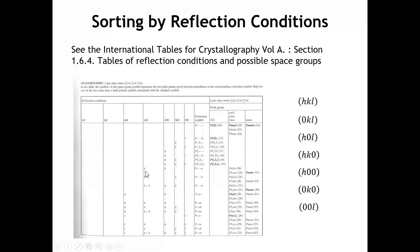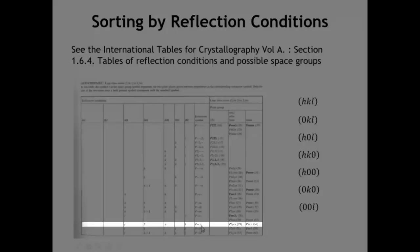We look at each category to see if there's a pattern in the peaks present and those absent. Where we see an H in the table, H must be an even number; where we see K, K must be even; H plus K means their sum must be even. Sometimes we might have H and K both required to be even, or conditions like 2H plus L equals 4N, meaning twice the H index plus the L index must be a multiple of 4. Once you've identified the row matching your systematic absences, you read across and it tells you all possible space groups — and oftentimes these are not unique. For example, one row might give both P2₁CA and PMCA, and we'd need other approaches to differentiate between them.